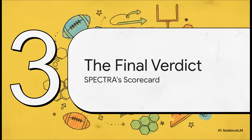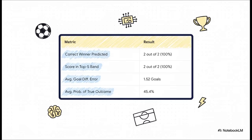So, after two very different matches, one it nailed, one it got the gist of, what's the final verdict on Spectra's performance? Let's break down the overall scorecard and see what we've really learned here. The numbers here, they tell a pretty compelling story. A perfect 100% record on predicting the winner. Can't argue with that. Both of the actual scores fell within its top five most probable outcomes. And yeah, the goal difference was off by about a goal and a half on average. But get this, the AI, on average, gave the correct outcome a 45% chance of happening. In the wild, unpredictable world of football, that is a remarkably high number.